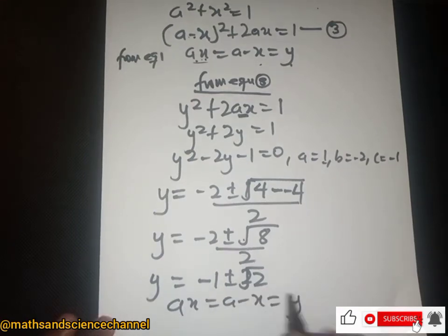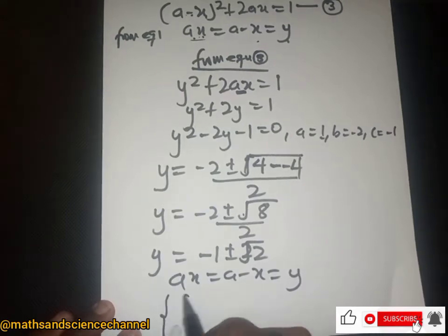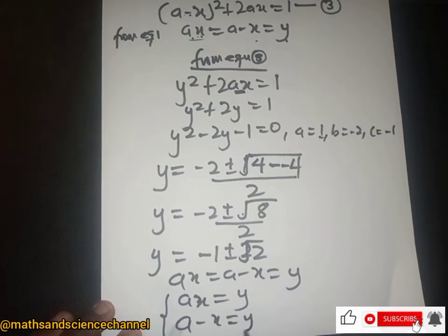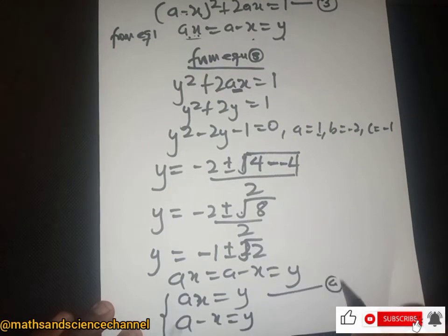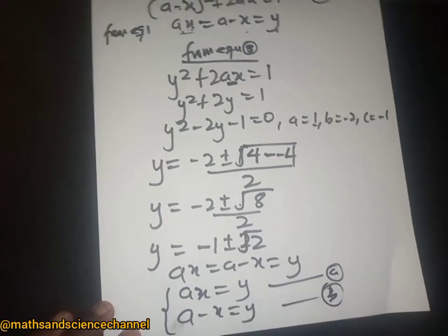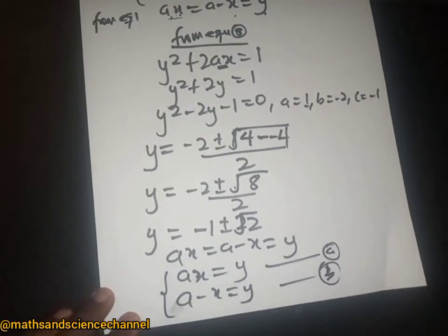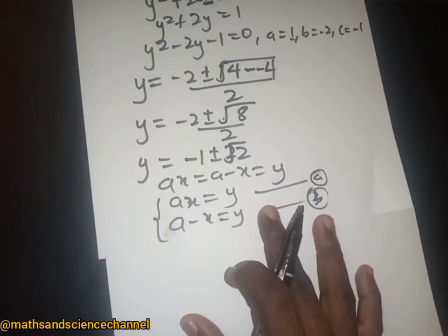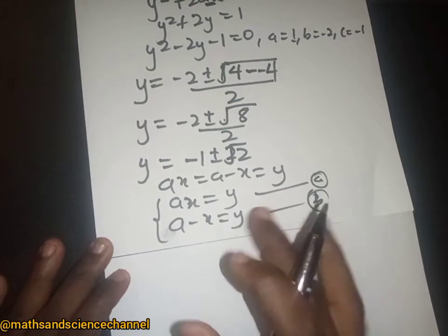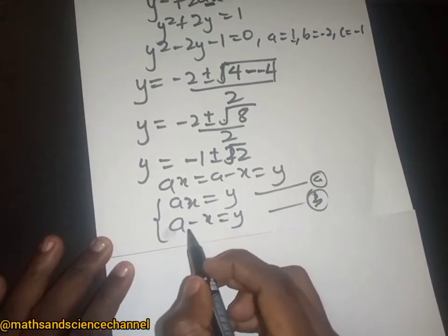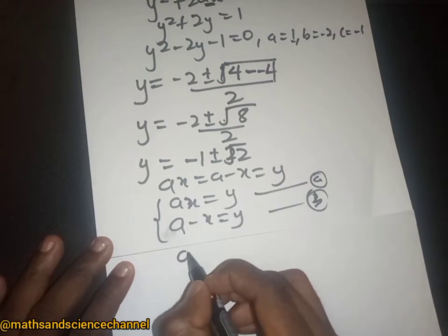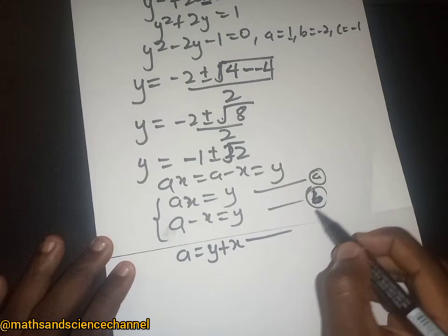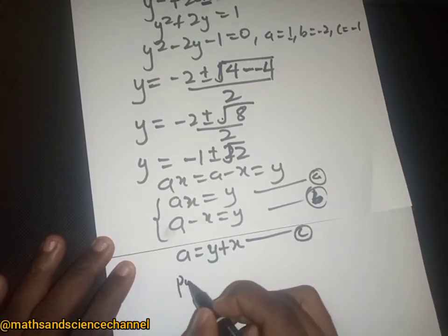From our equation, ax equals y and a minus x equals y. Let's call these equation A and equation B. Since we are looking for a, we can make a the subject from equation B: a equals y plus x. Let's call this equation C.